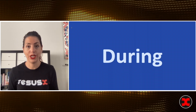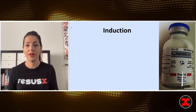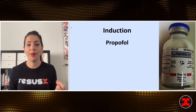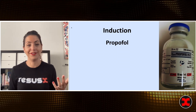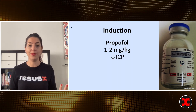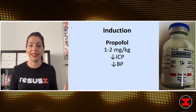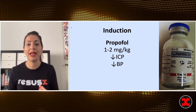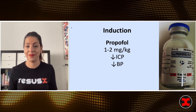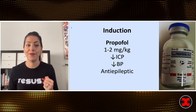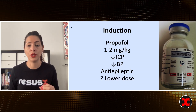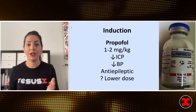During intubation, we have induction agents and neuromuscular blockade. For induction agents, let's talk about propofol, usually dosed at one to two milligrams per kilo. It's fantastic because it decreases ICP, which is what we want. But it also really decreases your blood pressure, and in patients who are already hemodynamically unstable, that can cause peri-intubation hypotension in around 30% of people. Although it is anti-epileptic, propofol may not be your first choice on its own. If you do use it, maybe start with a lower dose — a quarter or half — and optimize their hemodynamics first.